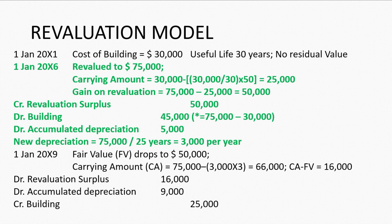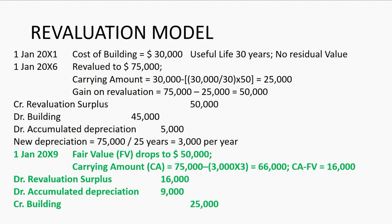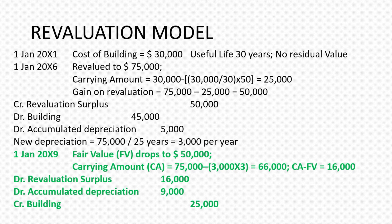Three years later the fair value drops to $50,000. By calculation the carrying amount is $66,000, so the difference between carrying amount and fair value is $16,000. This time we debit revaluation surplus by $16,000, debit accumulated depreciation by $9,000, and credit building by $25,000, reflecting the drop in value from $75,000 to $50,000.